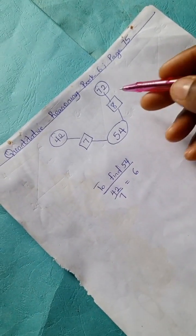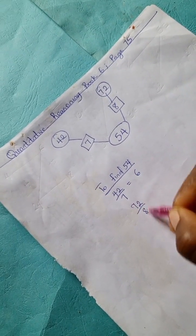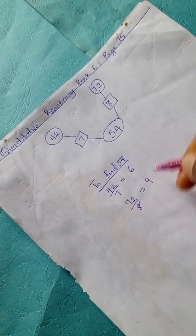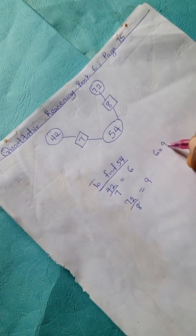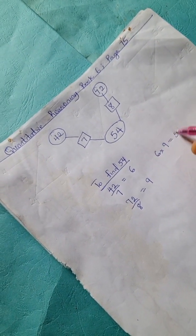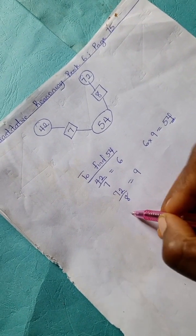And here we have 72 divided by 8 is 9. Hence, 6 times 9 is 54. So that's it for 54.